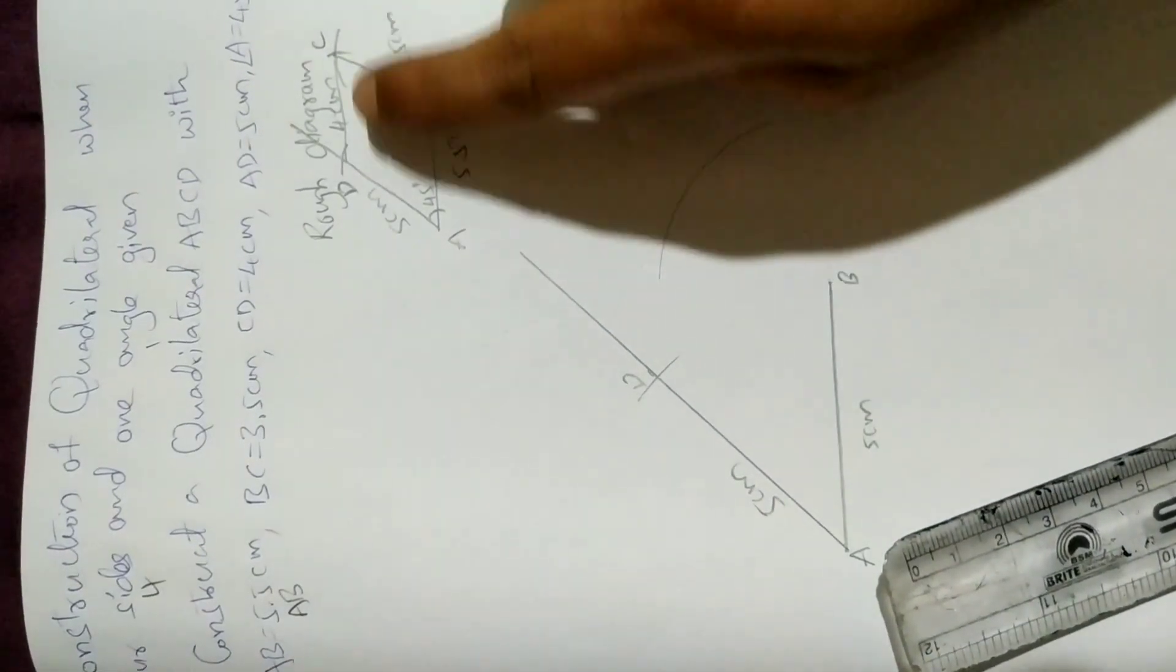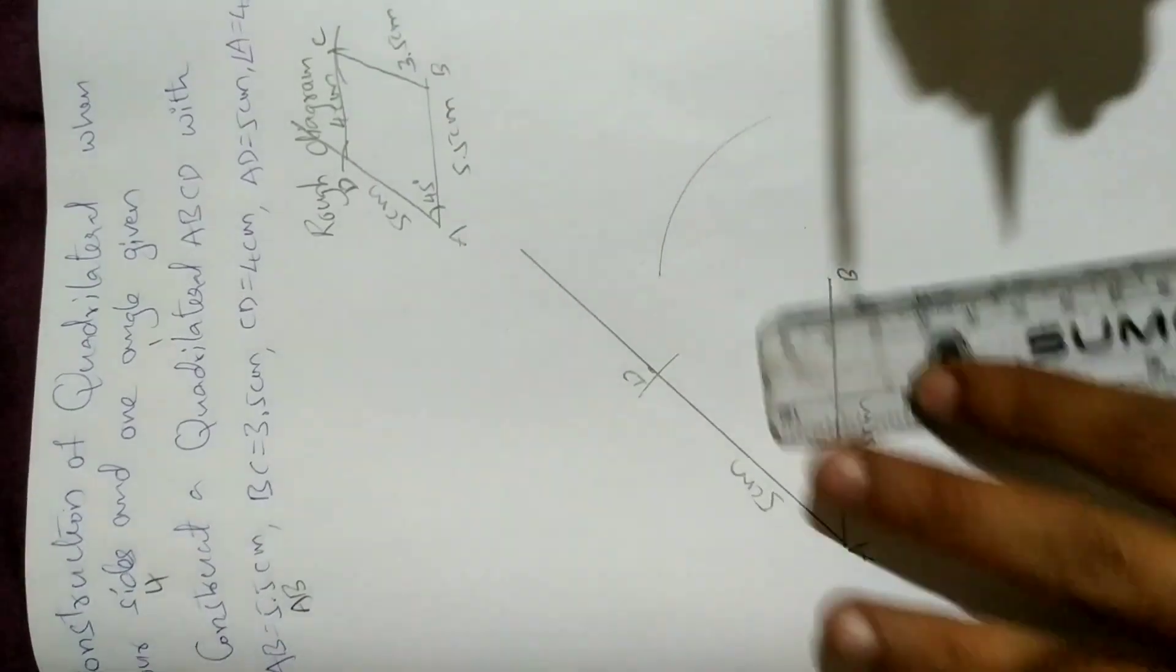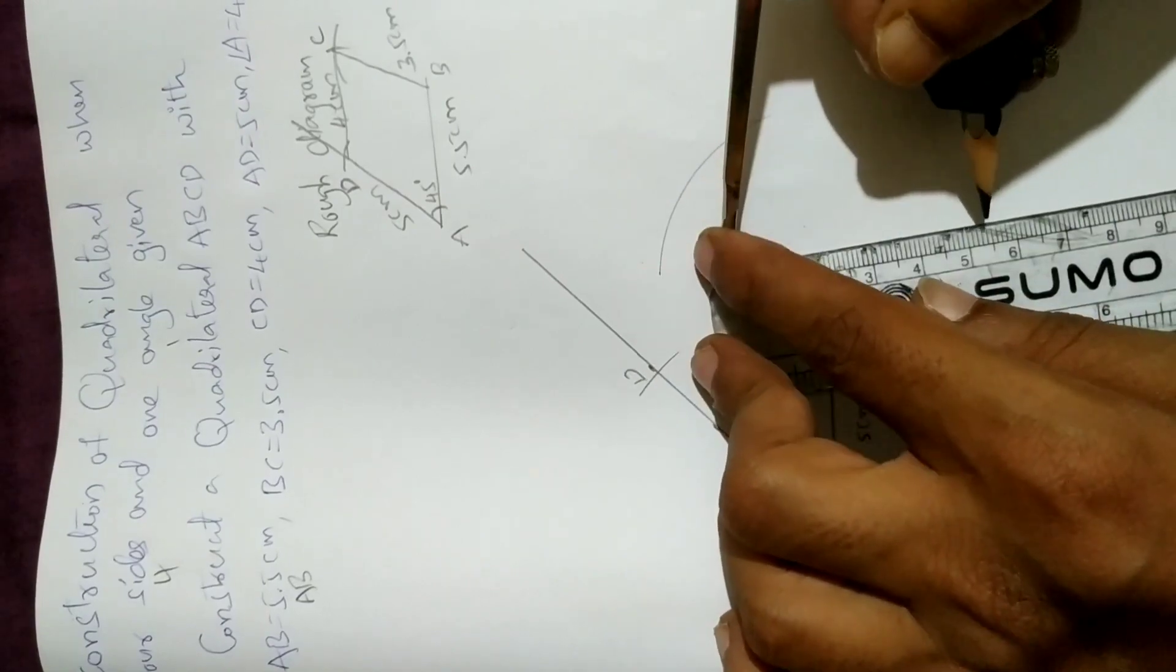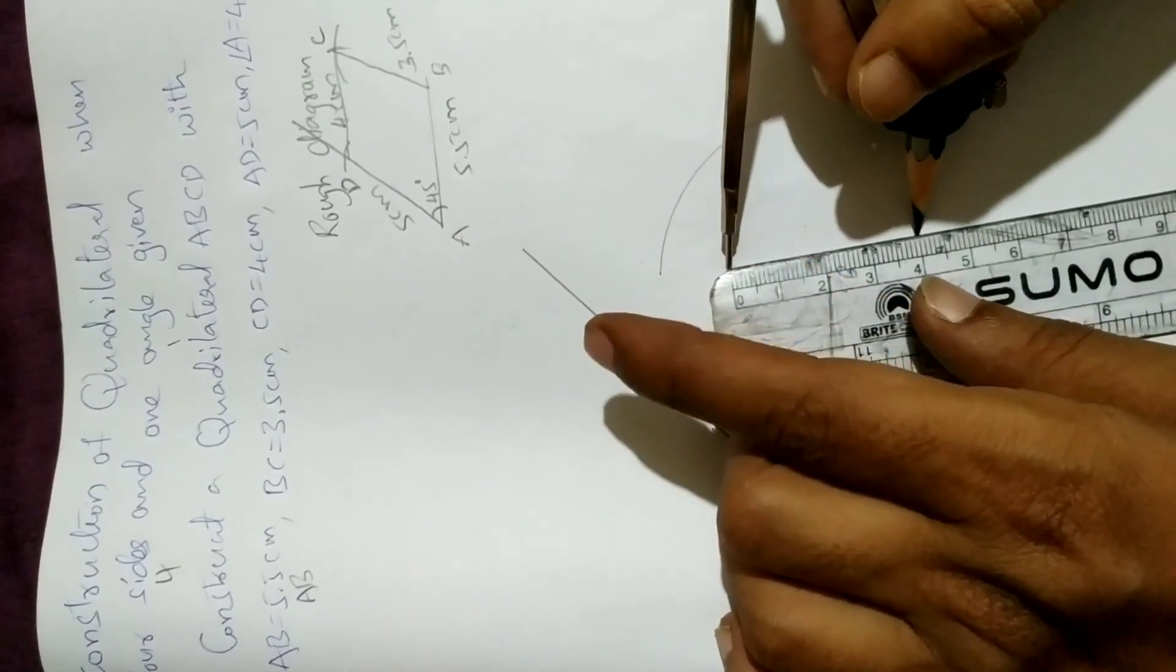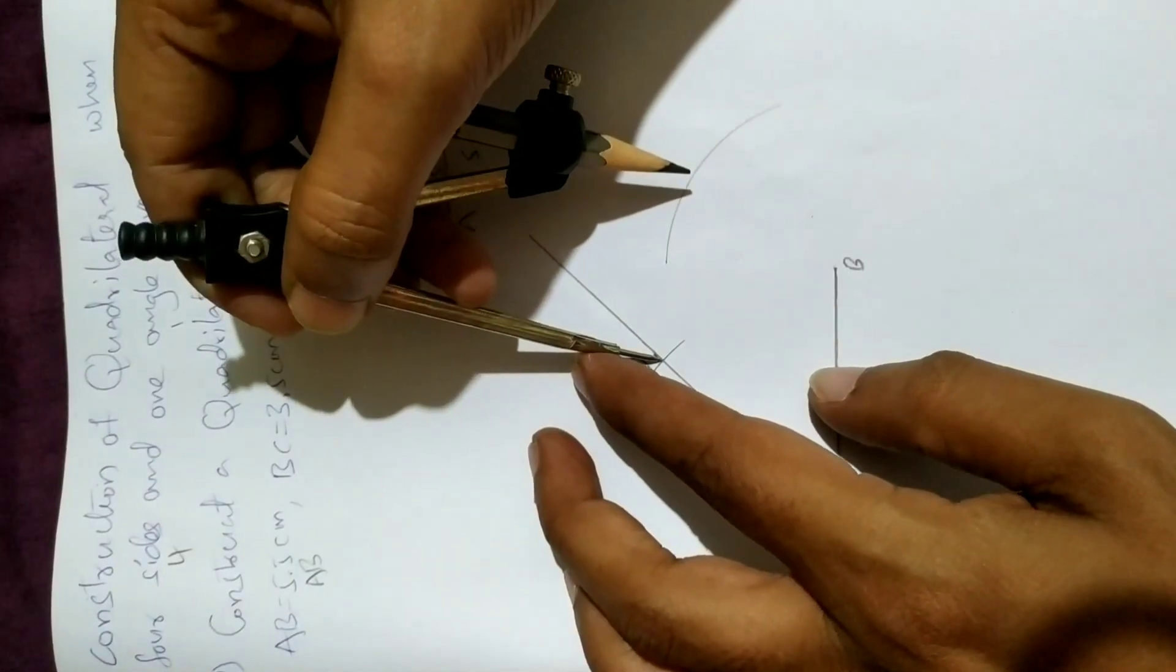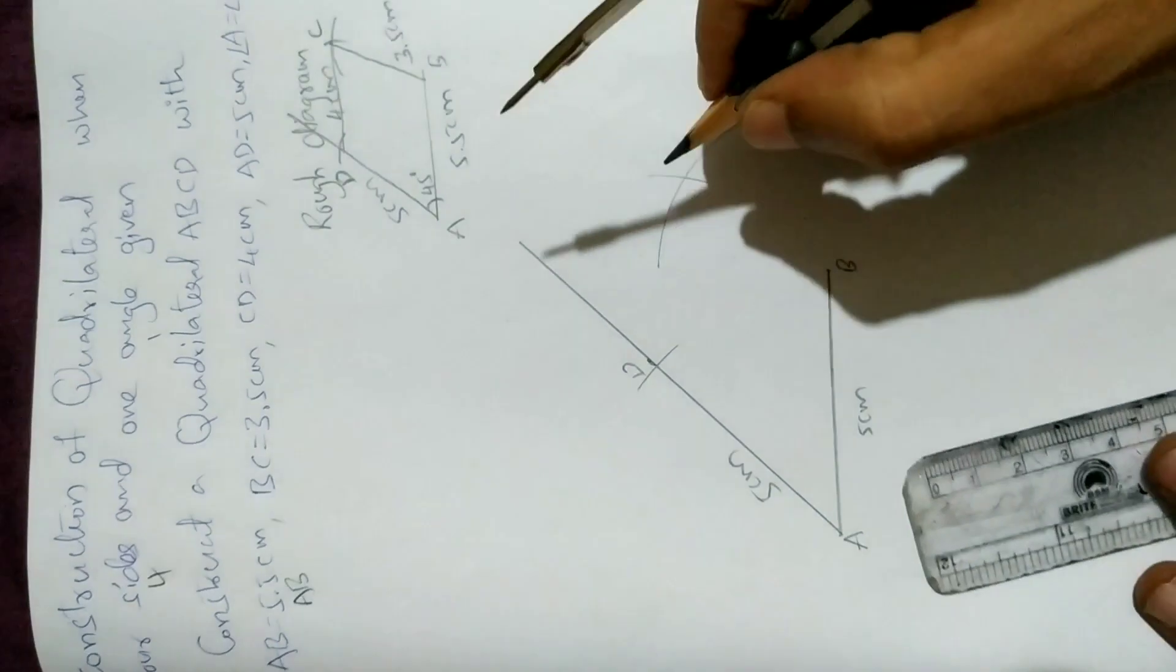From D, 4 centimeters radius. 4 centimeters radius. Here it is, this is 4. Exactly 4. From point D, at the correct exact point, this is point C.